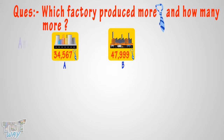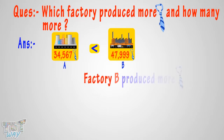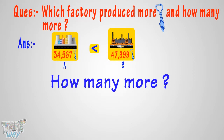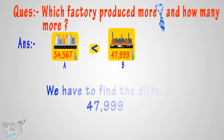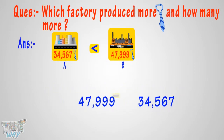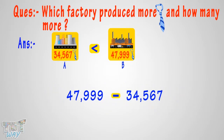47,999 is more than 34,567. So Factory B produced more ties. Now we have to find out how many more. That means we have to find the difference of ties produced — for that we will subtract the smaller number from the bigger number.